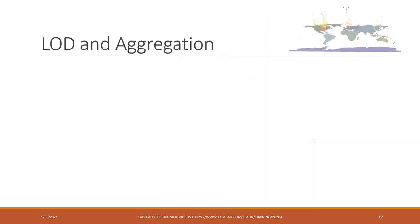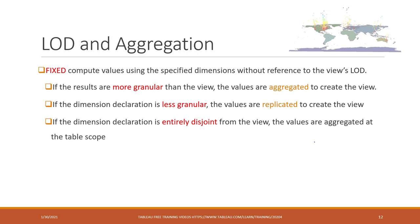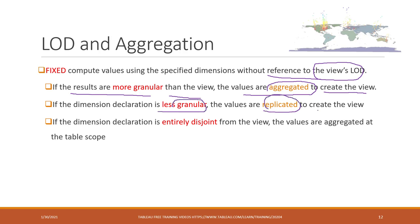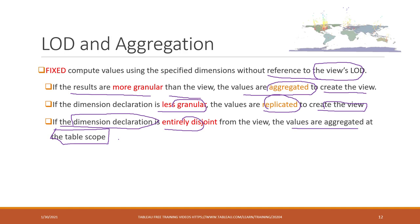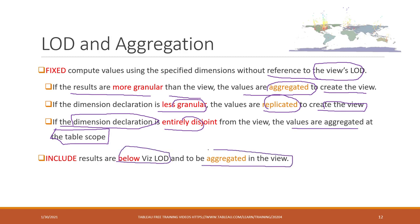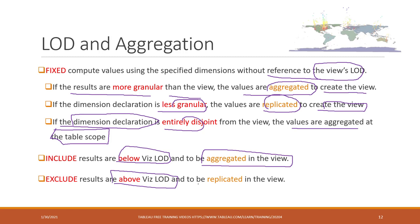FIXED computes values using specific dimensions without reference to the view's LOD. If the result of the FIXED is more granular than the view, the values will be aggregated to create the view. If the dimension is less granular, the view will be replicated. If the dimensions are disjoint — that is, the dimensions in the FIXED and in the view are disjoint — the values will be aggregated at the table scope. INCLUDE results are always below the view LOD and will be aggregated in the view. EXCLUDE results are always above the view's LOD and will be replicated in the view.